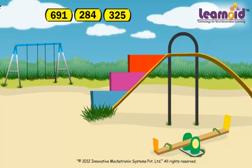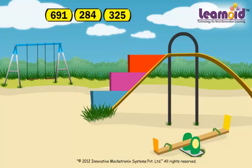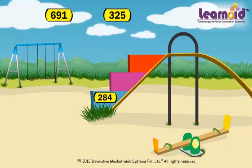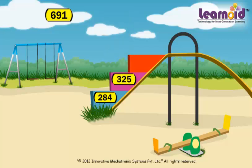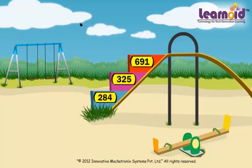Ascending order means arranging numbers from the smallest to the greatest number. First we will place the smallest number, that is 284, then 325, and then in the last we will place 691. These numbers are now in ascending order.